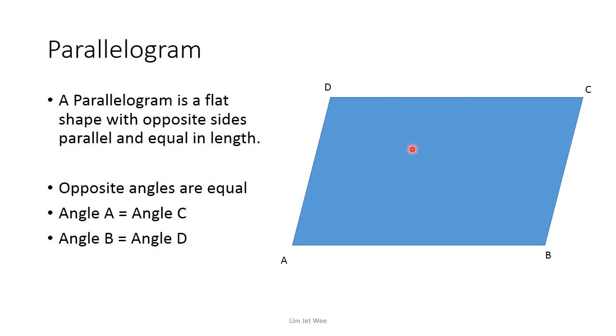First of all, it's flat, meaning it is two-dimensional. This is what it looks like—not 3D. The opposite sides are parallel. So let's have a look. AB is a line, CD is also a line. If you look at AB and CD, they are parallel to each other. I can keep on extending these two lines; they are always the same distance from each other and they will never meet.